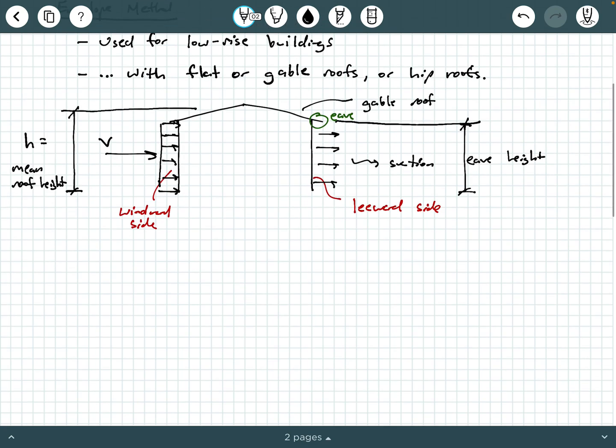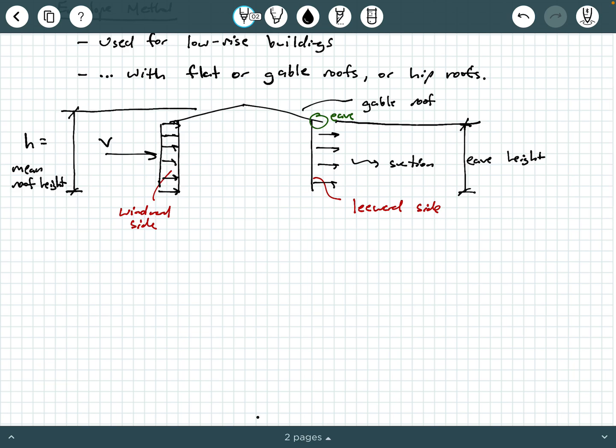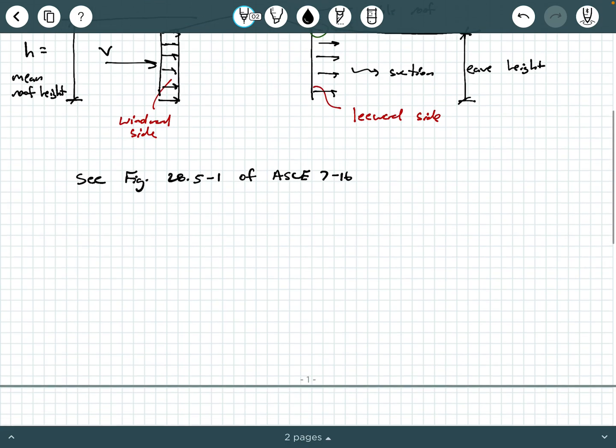We can make a note here. See figure 28.5-1 of ASCE 7-16. Maybe pause the video, take a second, and open up your ASCE 7. You can see a three-dimensional drawing of a gable roof system with wind pressures with two different cases, case A and case B, of the direction of the wind blowing on that kind of gable structure there.